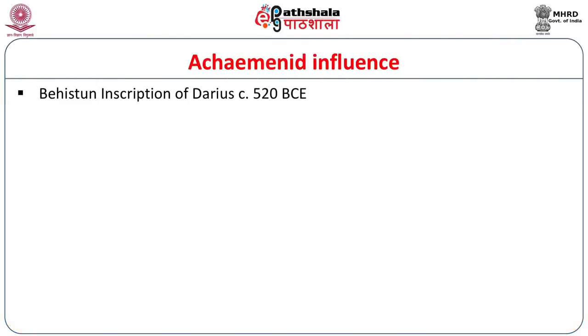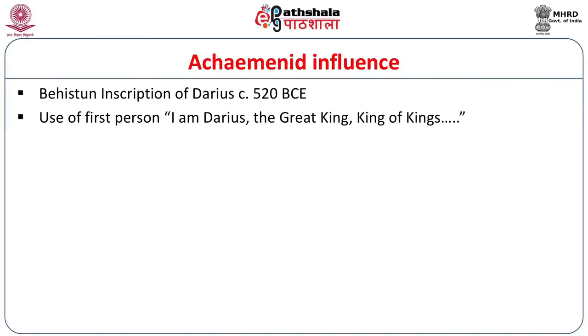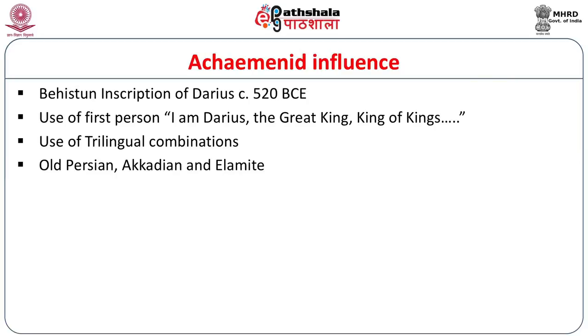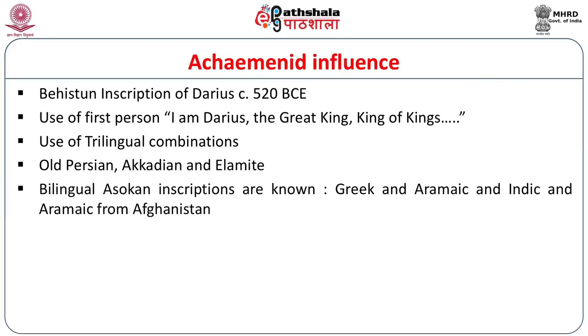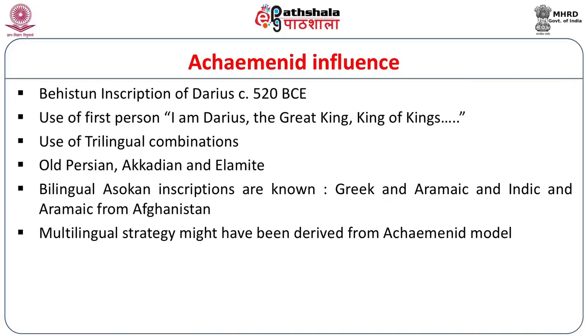The Ashokan inscriptions have a major Achaemenid influence, clearly seen in the Behistun inscription of Darius issued circa 520 BCE. Darius uses the first person — 'I am Darius the great king, king of kings' — which Ashoka also uses. There is also the use of trilingual combinations: Old Persian, Akkadian, and Elamite. Bilingual Ashokan inscriptions are also known: Greek and Aramaic, and Indic and Aramaic inscriptions from Afghanistan reflect this relationship. The multilingual strategy might have been derived from the Achaemenid model.